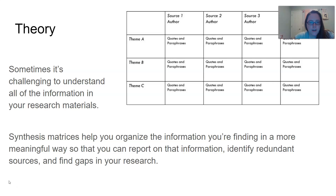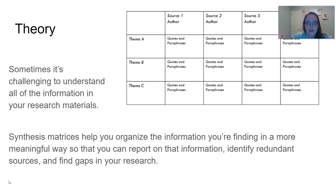What you see here on your screen is a chart. In the far left column you see the phrases Theme A, Theme B, and Theme C. I would actually call those topics, although 'theme' is probably fine — that feels very literary, so I prefer the word 'topic.' You don't have to have your rows being your themes or topics; you can have your columns — that's how I'll set this up later. On the top row, columns two through five are Source One, Source Two, Source Three, and Source Four. Everything in the middle — not the first row or first column — is all quotes and paraphrases from your sources.